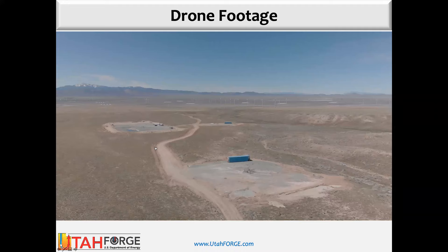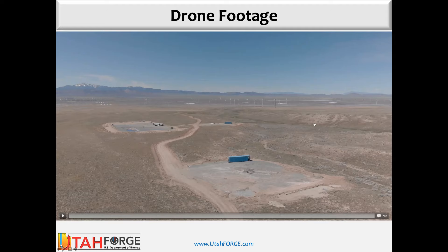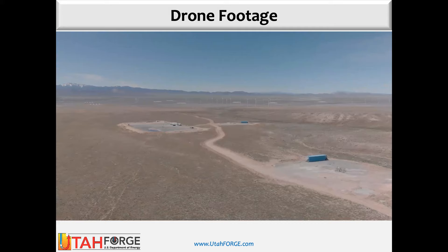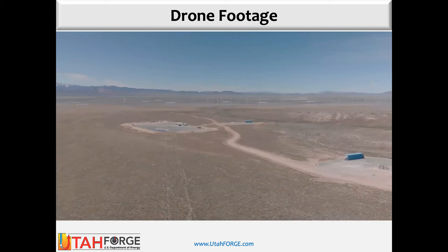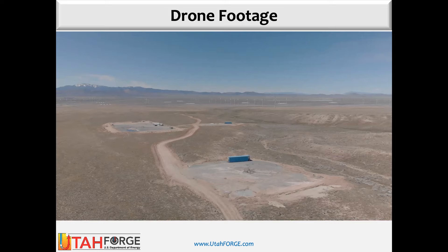Here is some drone footage of the site taken last fall — an aerial photo looking to the west from the east. Our main well pad for initial characterization work and confirmatory drilling of Well 5832 is visible. There are also some seismic characterization holes, and additional wells and well pads being drilled that will support Phase 3 operations. As we circle, you can see sizable wind farms in the area. The site is actually pretty wide open.